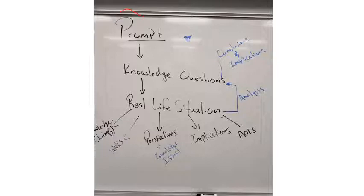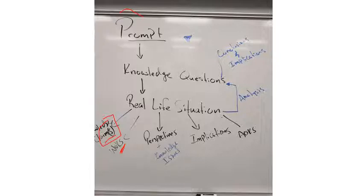We're doing a mini presentation activity in class to work on this. We want to think about: when we have our real-life situation, what are the knowledge claims being made — which just means what conclusions is this article drawing? What ways of knowing apply to this real-life situation, and how is it representative of the knowledge question as a whole? How does it give us insight into the knowledge question based on what way of knowing is lending itself well to the situation? You can always bring in perspectives and knowledge issues.